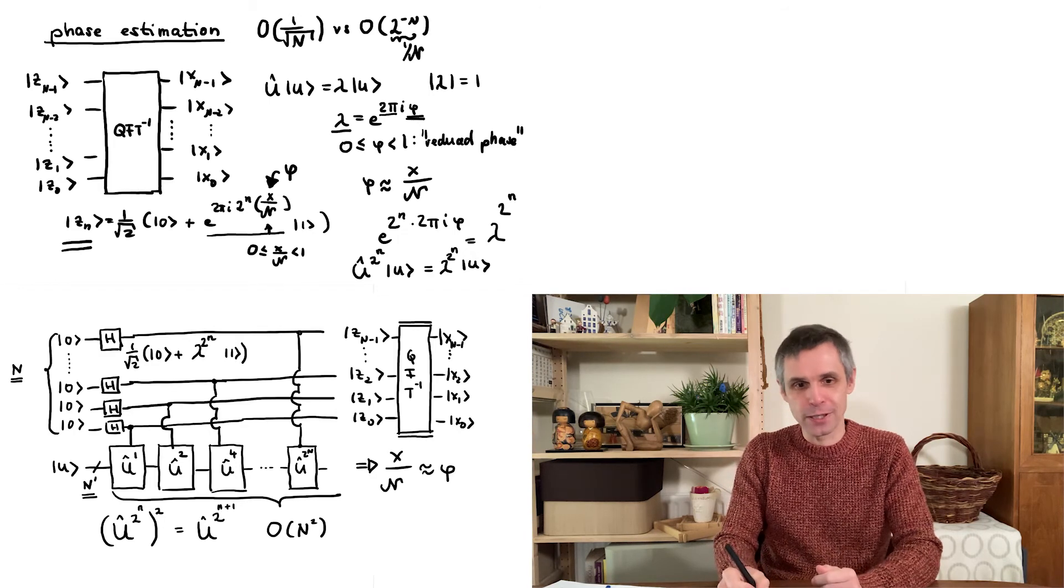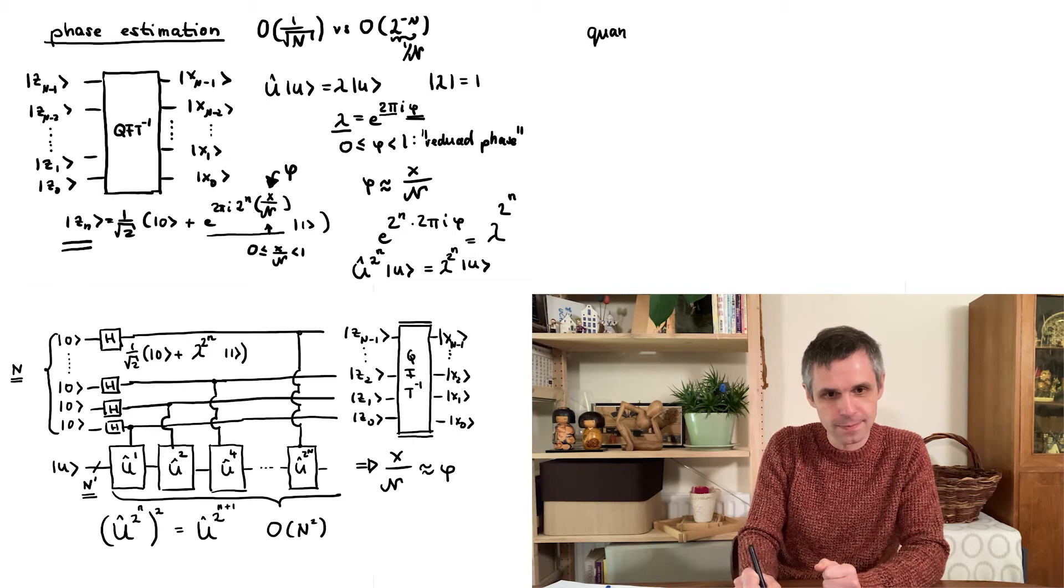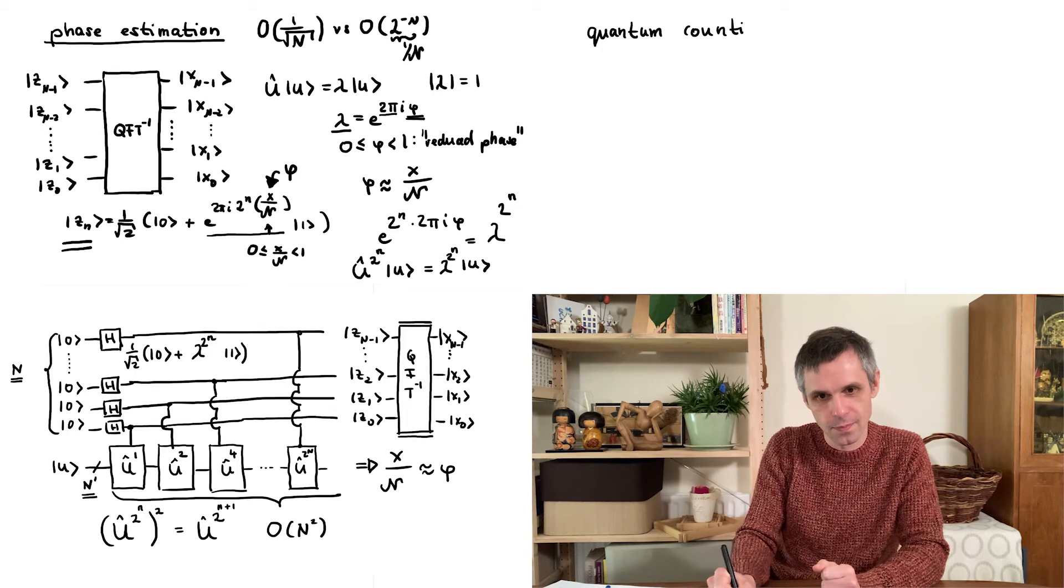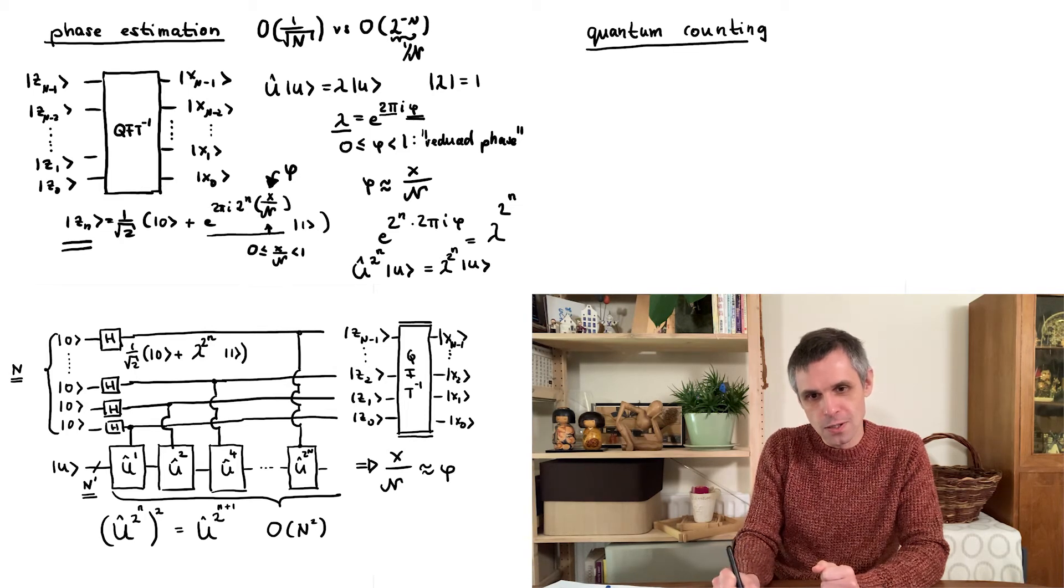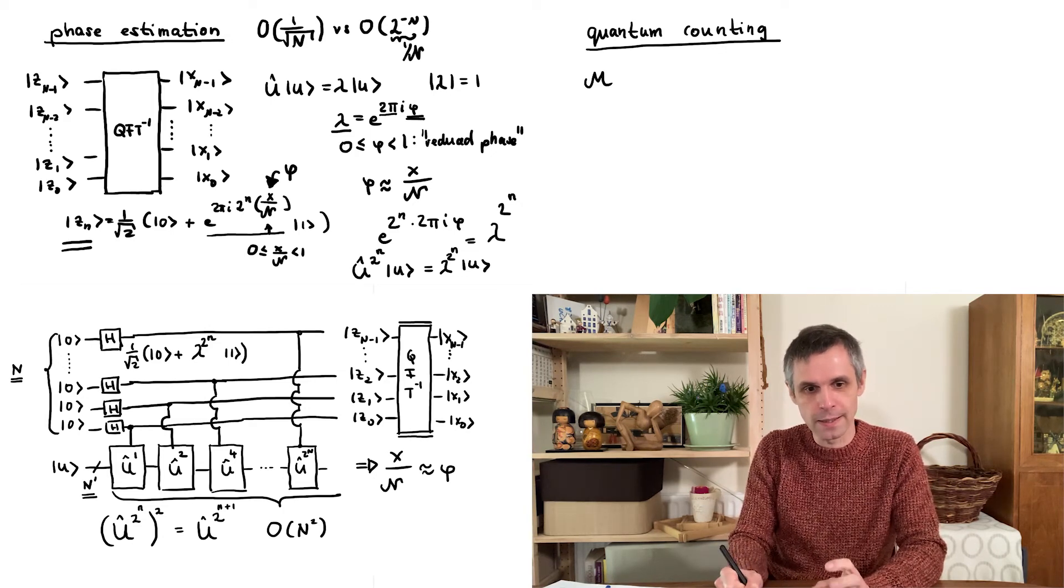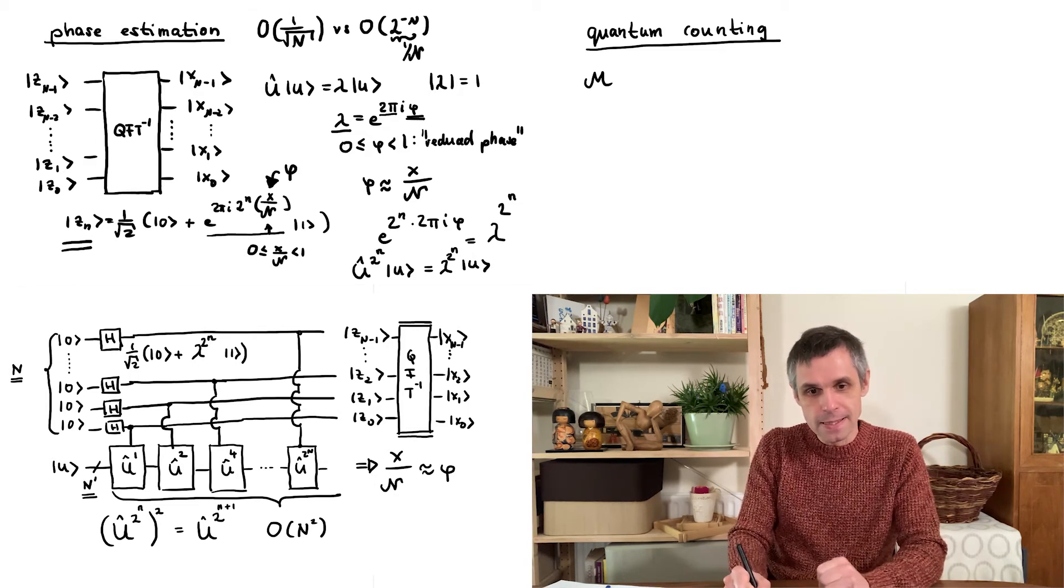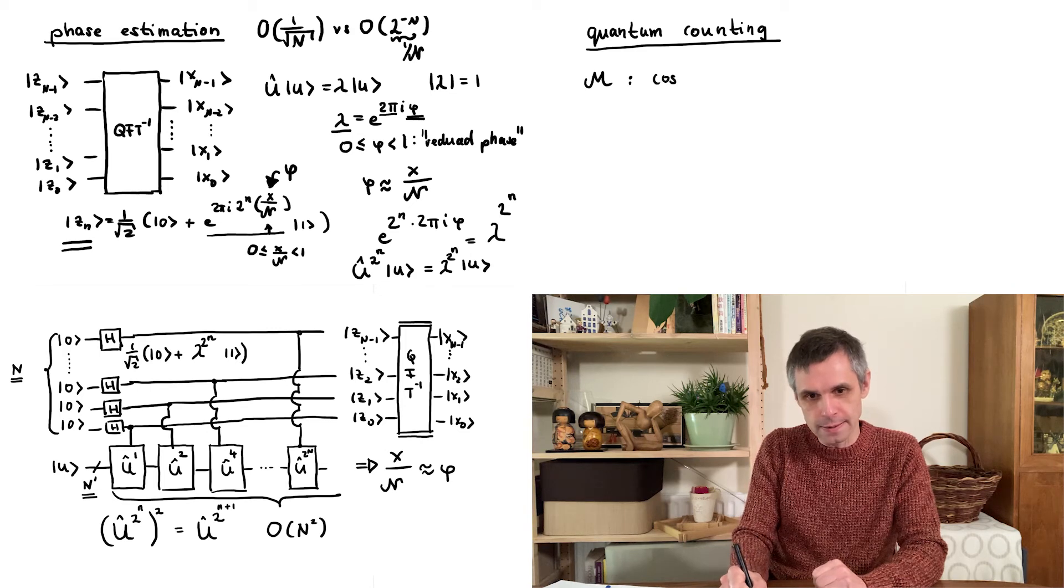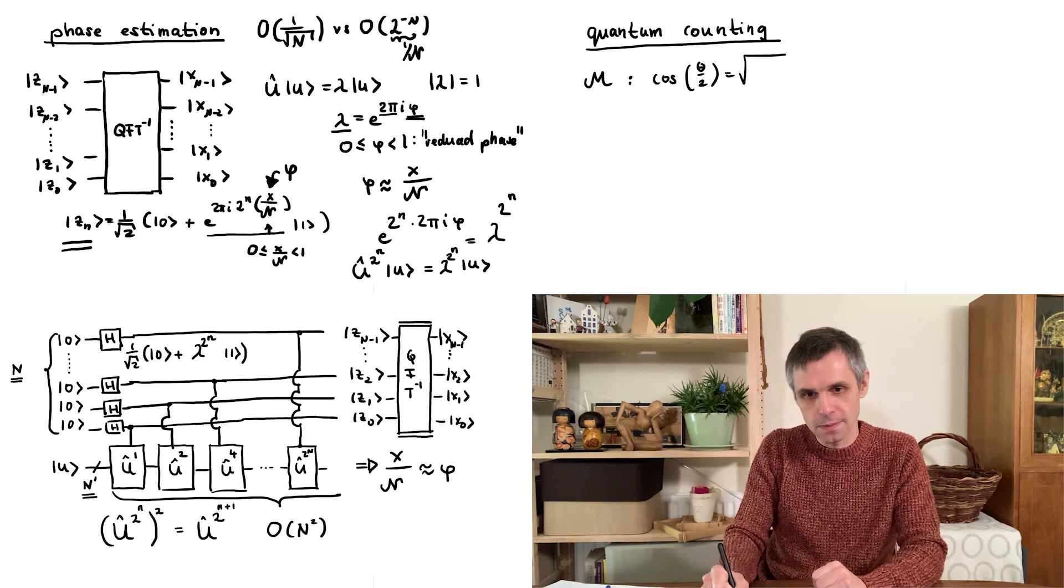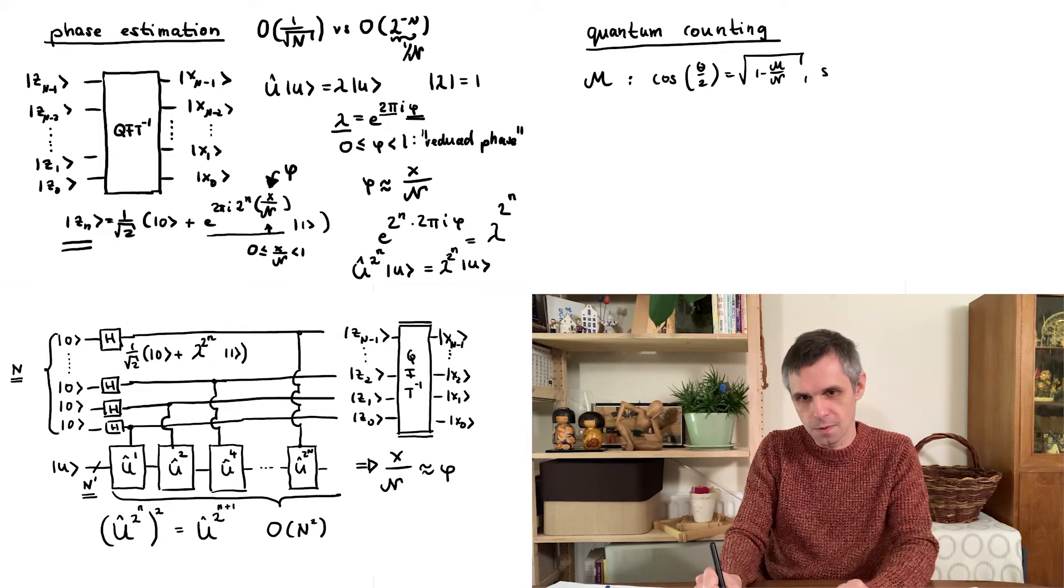And we turn to one of these applications straight away in this segment, and this is quantum counting. I mentioned this already when we introduced the Grover algorithm. And there I mentioned that there is a mechanism to obtain knowledge of this number curly m of matching entries in the database.